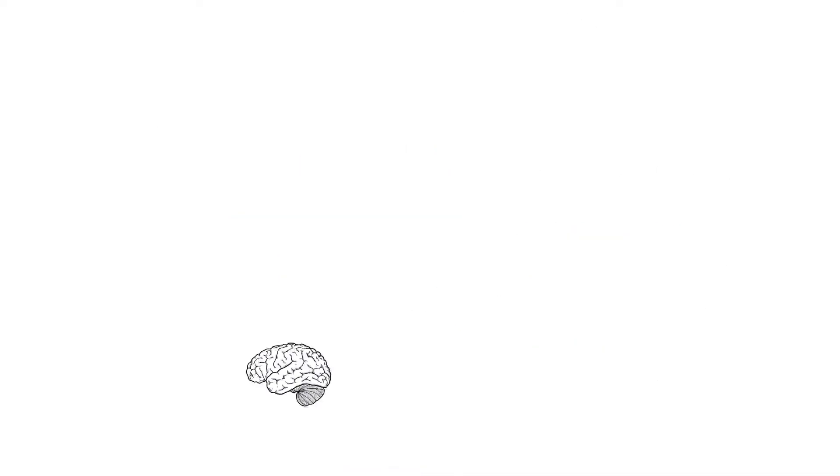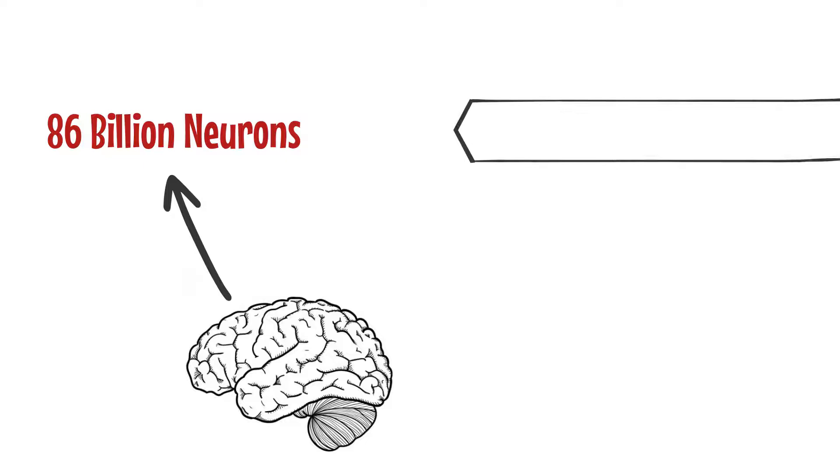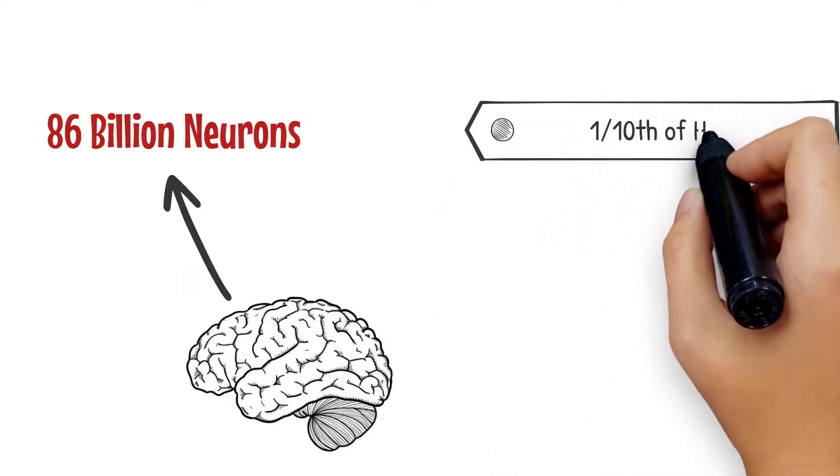They are called neurons. Our brain has nearly 86 billion neurons and all of them have different shapes and sizes. Some of them have a diameter that is one-tenth that of a hair strand.